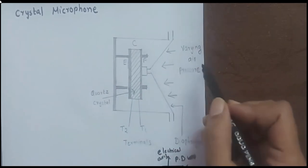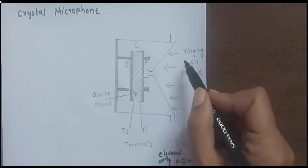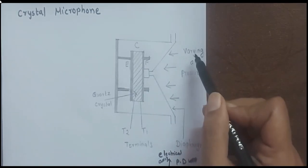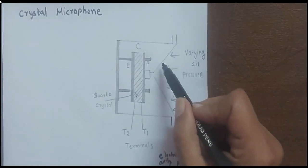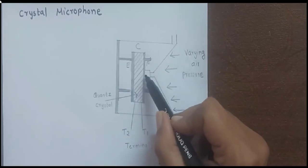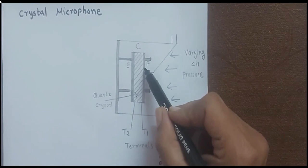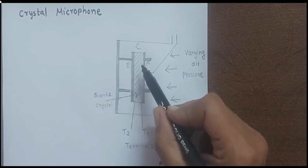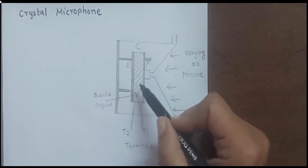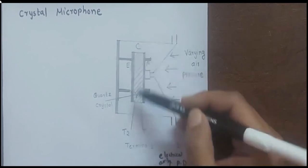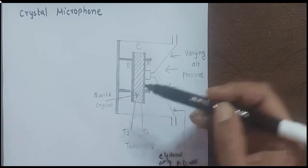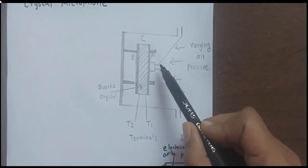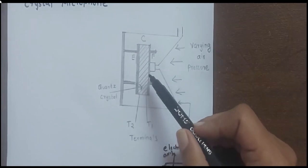When a person speaks, sound waves create varying air pressure that hits the diaphragm. The diaphragm starts moving and vibrating. Since plate F is attached to the diaphragm, plate F also starts vibrating. This causes the quartz crystal to undergo stress — expansion and compression — which is the piezoelectric effect. A potential difference is generated on the perpendicular faces and taken from terminals T1 and T2, converting sound energy into an equivalent electrical signal.